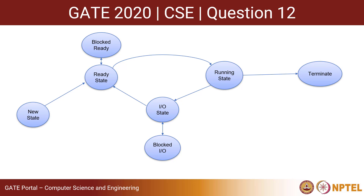There is one more state known as the blocked IO state. This happens if there are many processes present in the IO state but there are not enough IO devices present in the system. In that case, the process can be taken into the blocked IO state. There is a to-and-fro movement between the IO state and the blocked IO state depending upon the availability of IO devices. Also, the process can be taken back from blocked IO to the blocked-ready state.